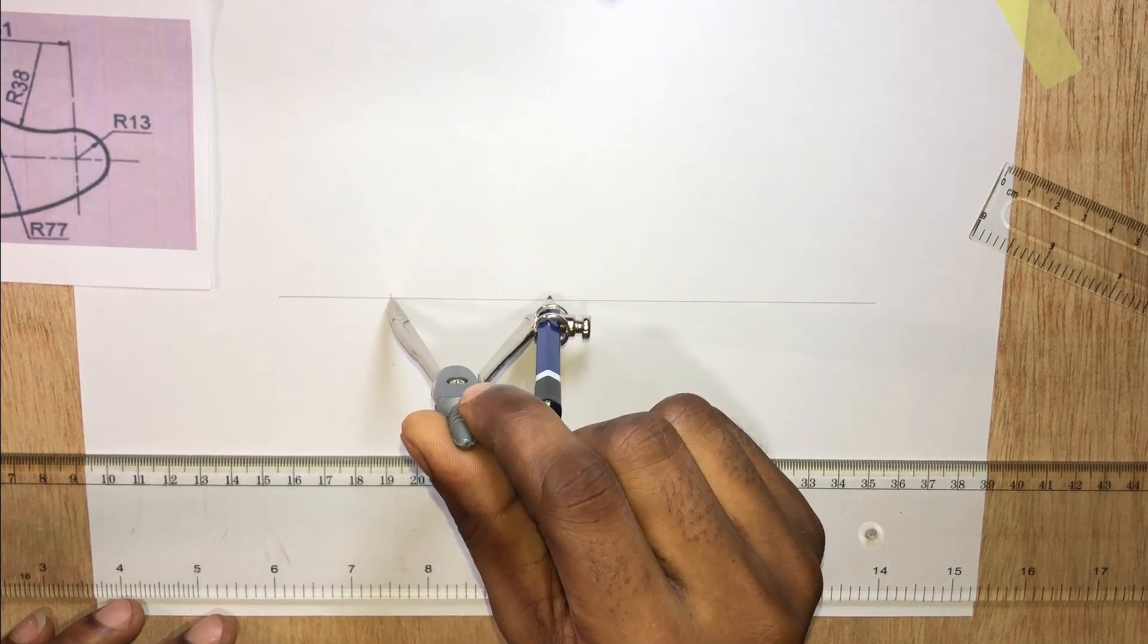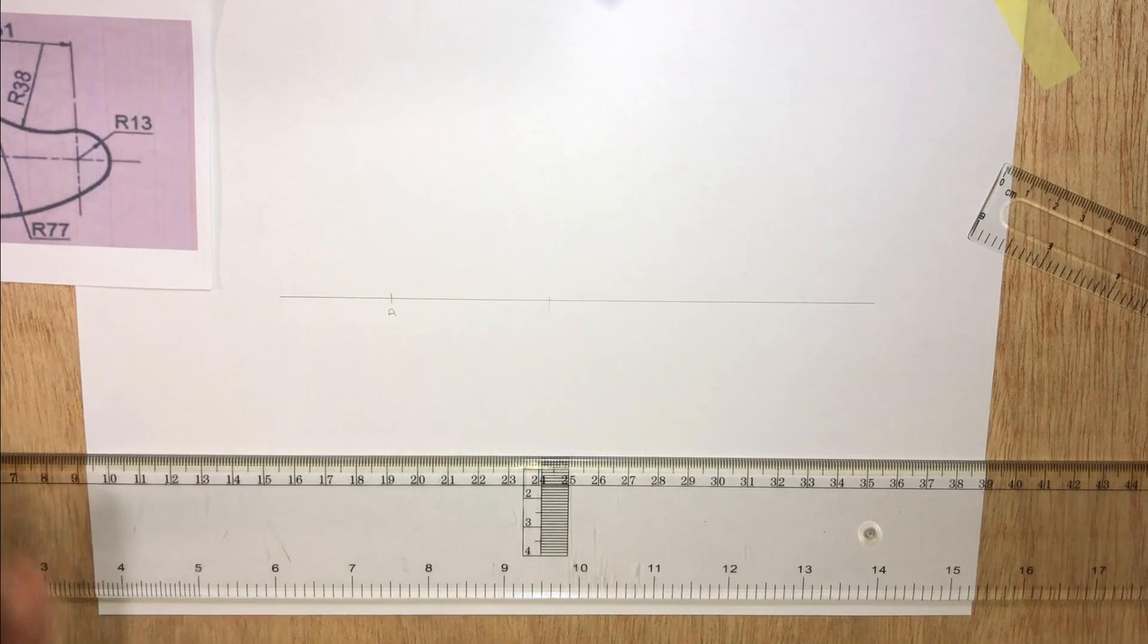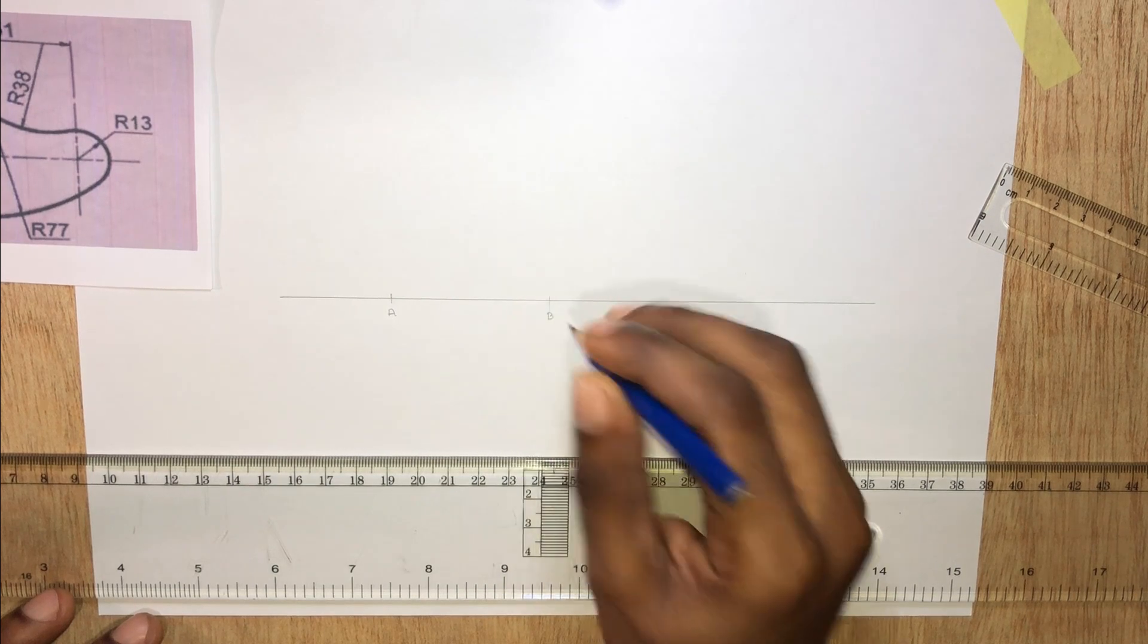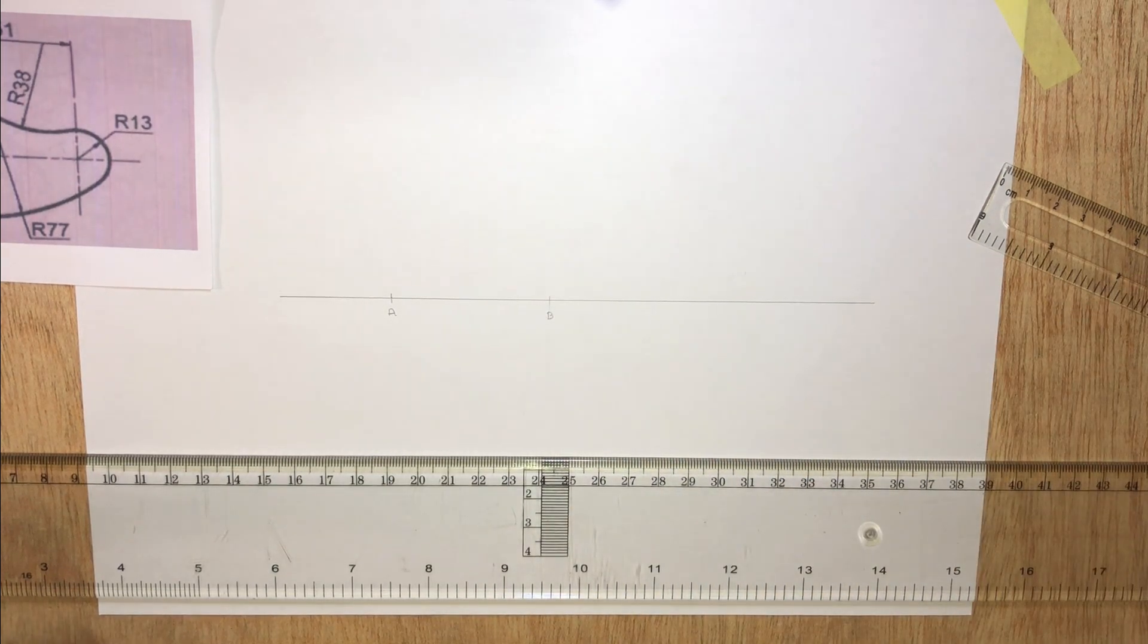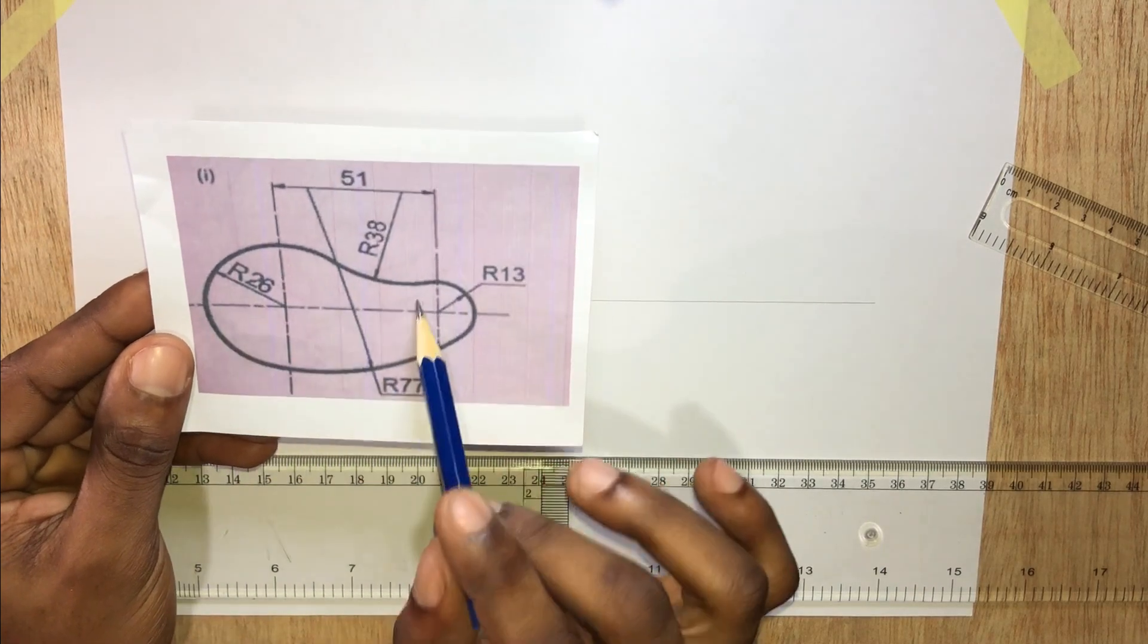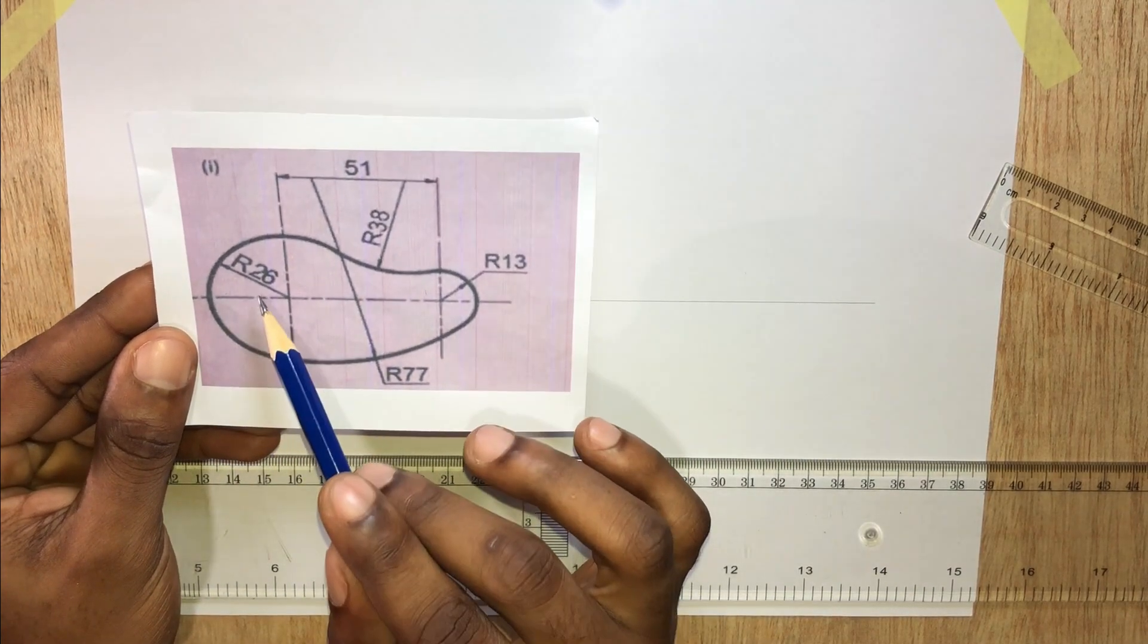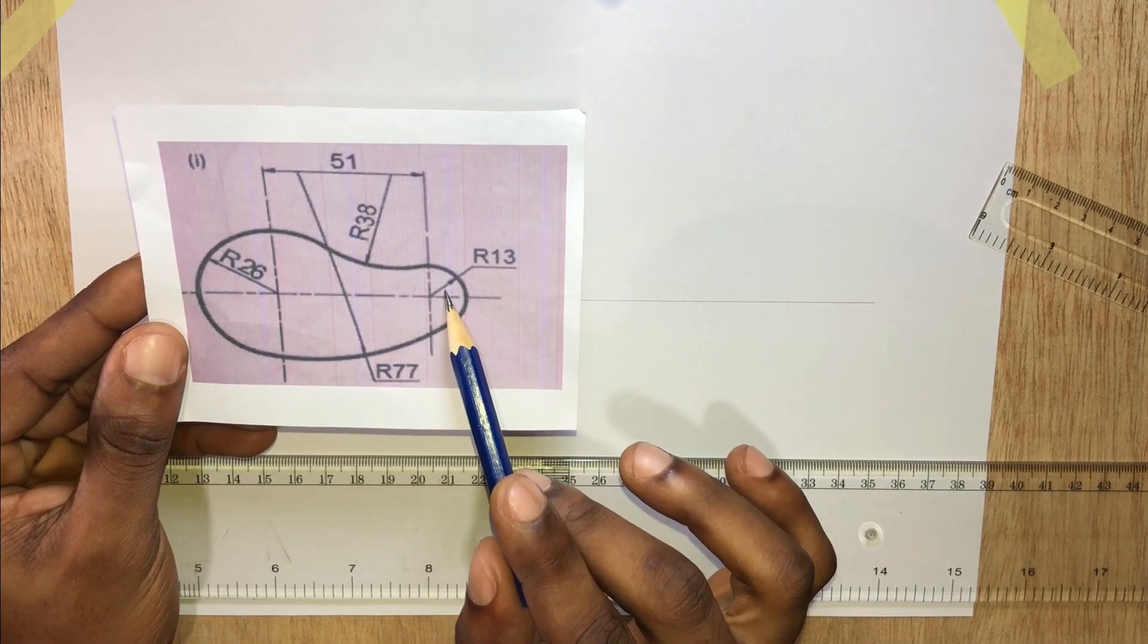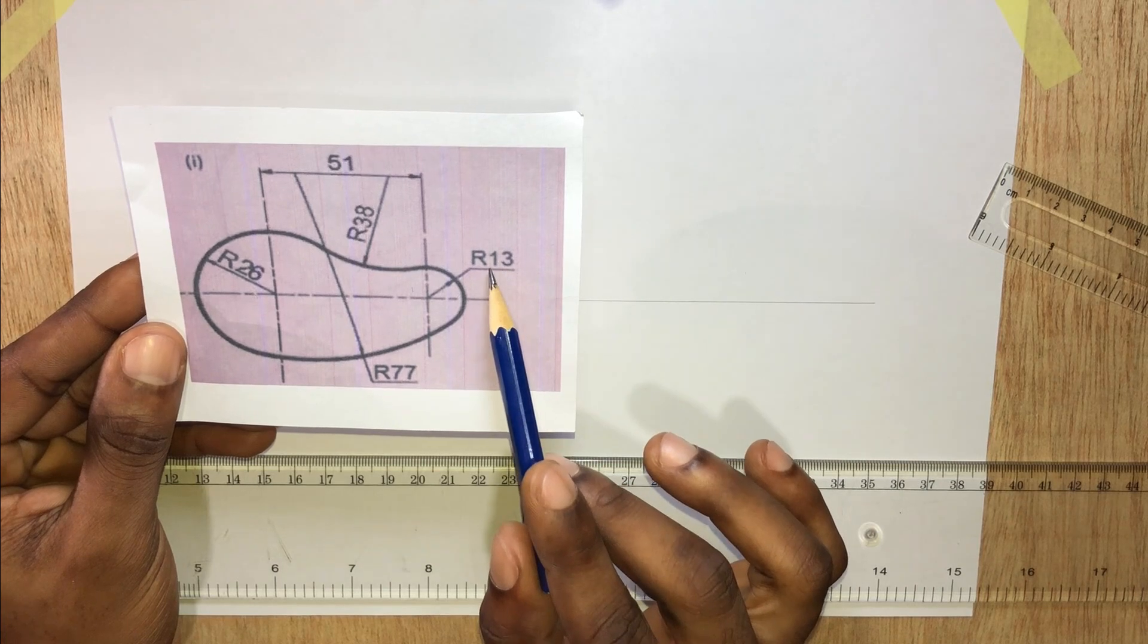Now let's draw the two circles here. This circle is having a radius of 26 millimeters, while this circle is having a radius of 13 millimeters.